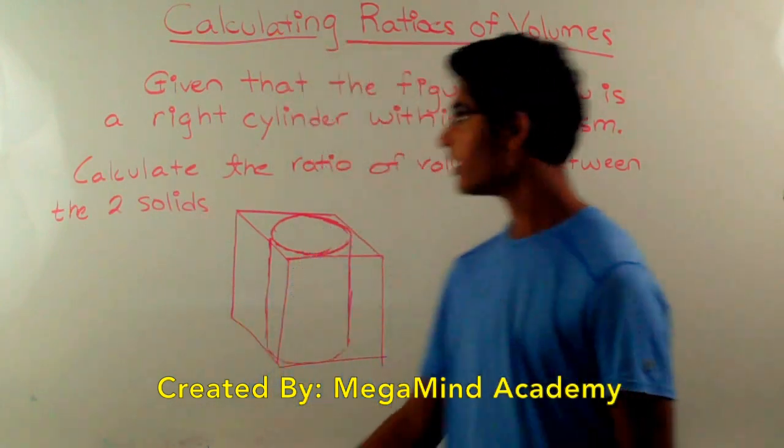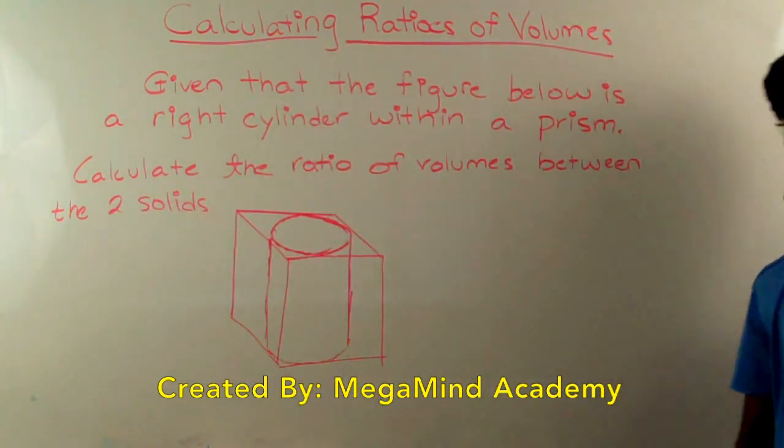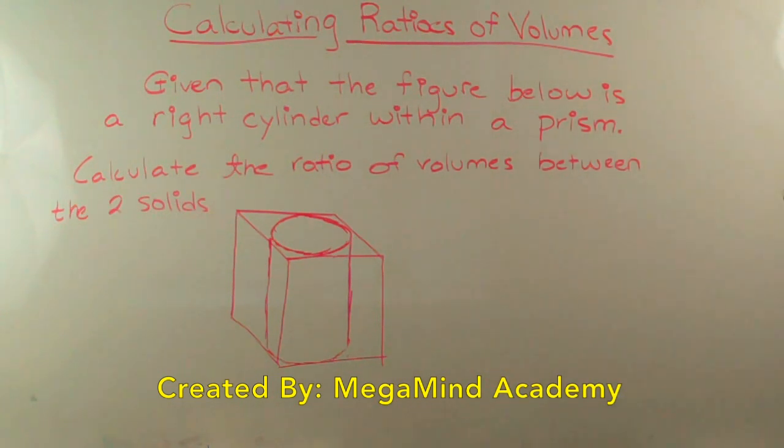Today we're going to learn about calculating ratios of volumes. Let's say we have a problem like this. Given that the figure below is a right cylinder within a prism, calculate the ratio of volumes between the two solids.